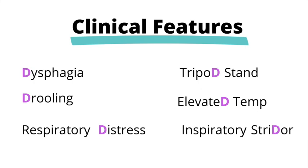Another important thing to note is that patients use a tripod stand to help them improve their breathing. In the tripod position, they have their head slightly leaning forward and their tongue is sticking out. They assume this position because it allows maximum air entry into the lungs. If you're seeing a patient with suspected epiglottitis, we should avoid laying them down on their back. These patients are classically described as having a toxic appearance, looking very, very ill and having a lot of difficulty breathing.